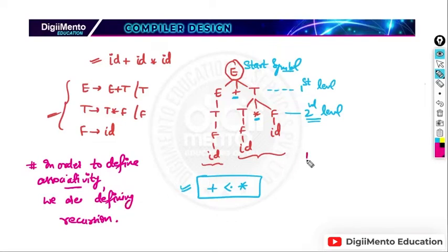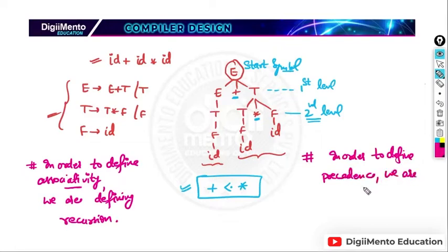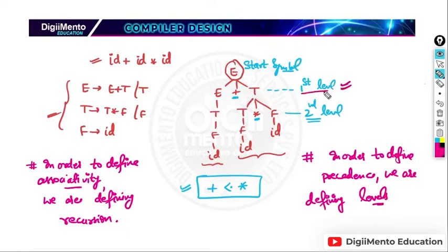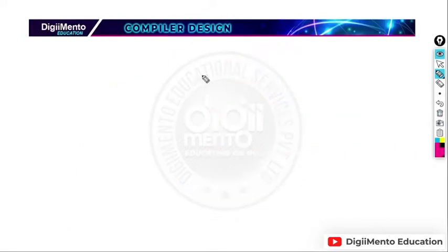In order to define precedence, we define levels. The operator at the first level — closest to the start symbol — has the least precedence. The operator at a lower level, farther from the start symbol, has the highest precedence. So in order to define precedence, we define levels.